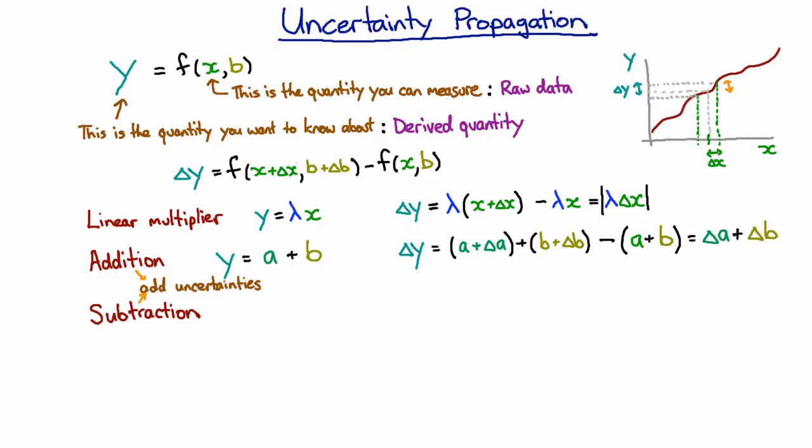Now what happens when we multiply values? Then we can follow exactly the same process again. When we expand out the bracket, we're going to have four terms. We're going to have a times b, which is going to cancel with that a times b. We're going to get terms where we have an error times the other value.